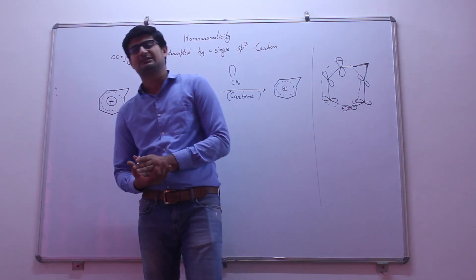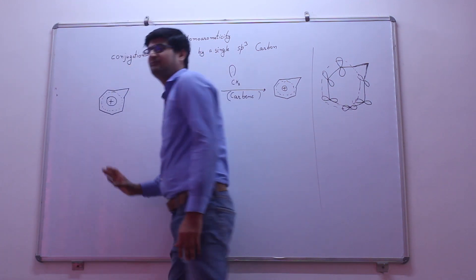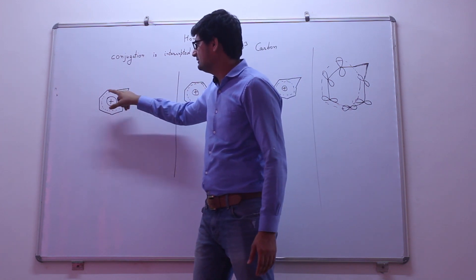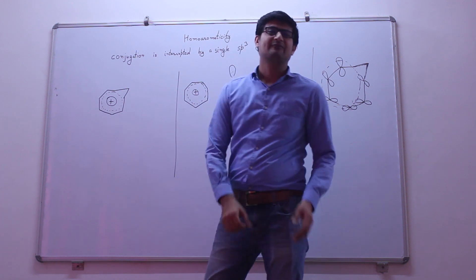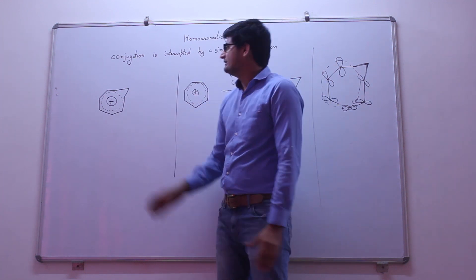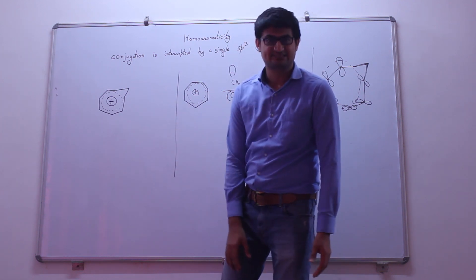A carbon must be sp3 hybridized for homoaromaticity. As you can see in the example, we are having seven carbons which are sp2 hybridized. The eighth carbon is sp3 hybridized, but still aromaticity is there.